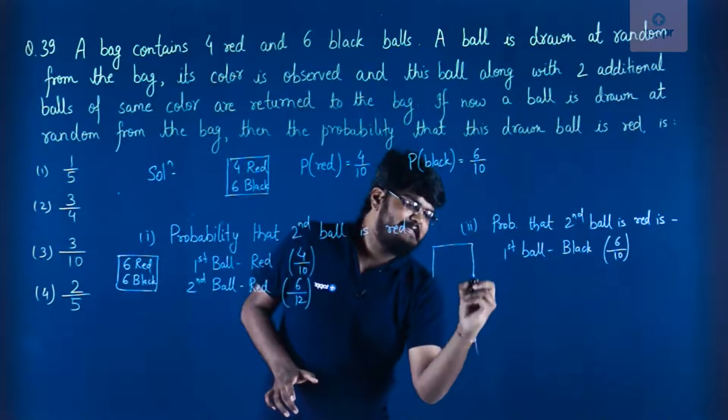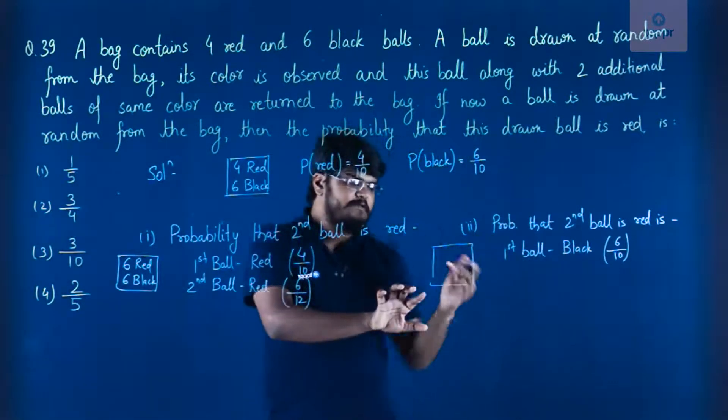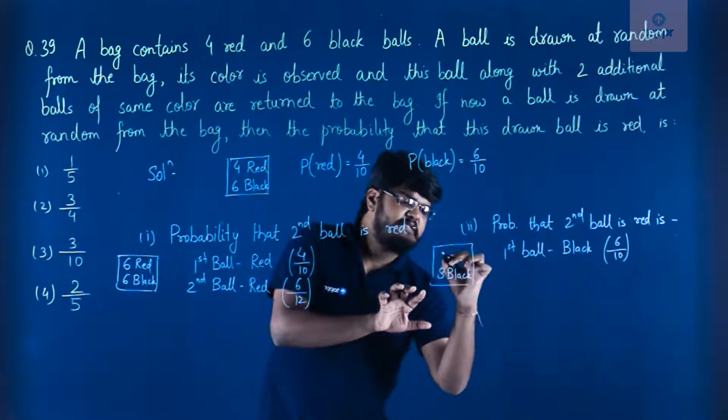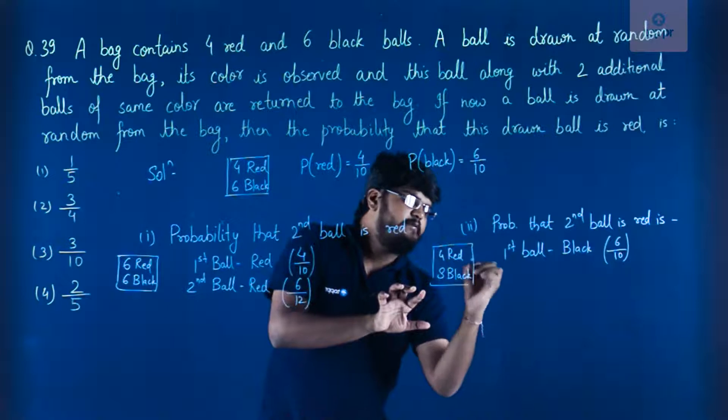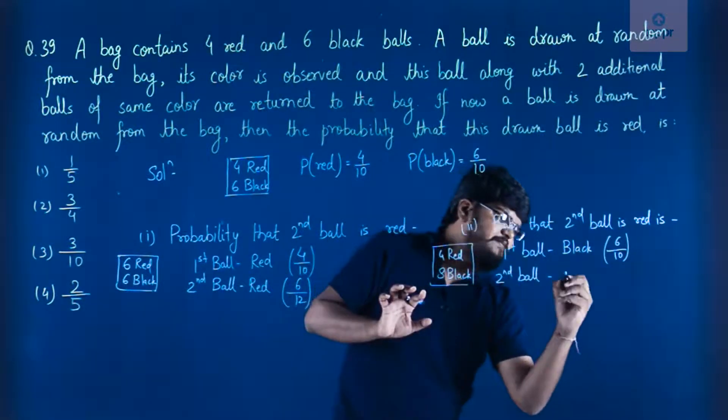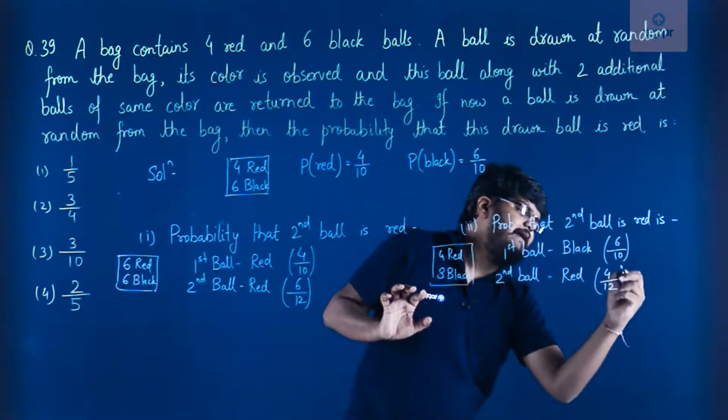Now in the bag, since the first ball was black, two additional black balls will be added. So this will make the total balls as 8 black balls and 4 red balls. So second ball, if it has to be red, then the probability would be 4 by 12.